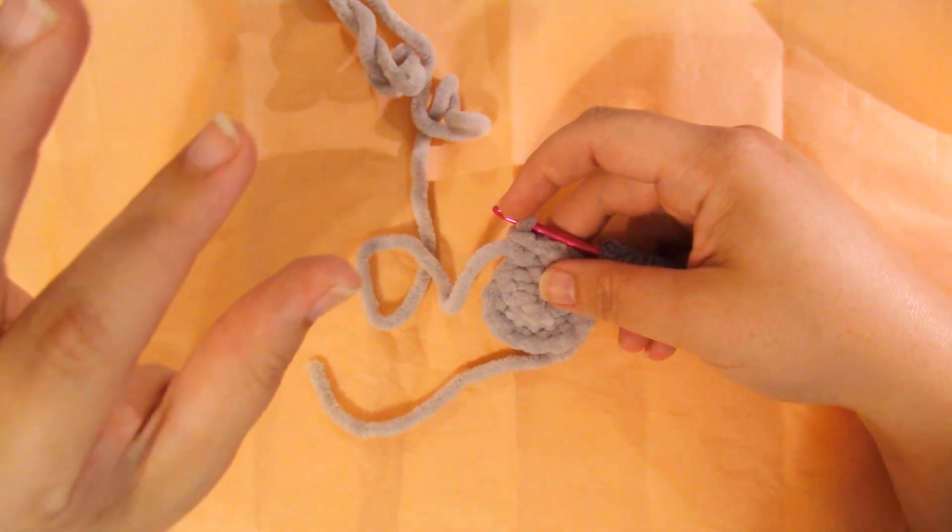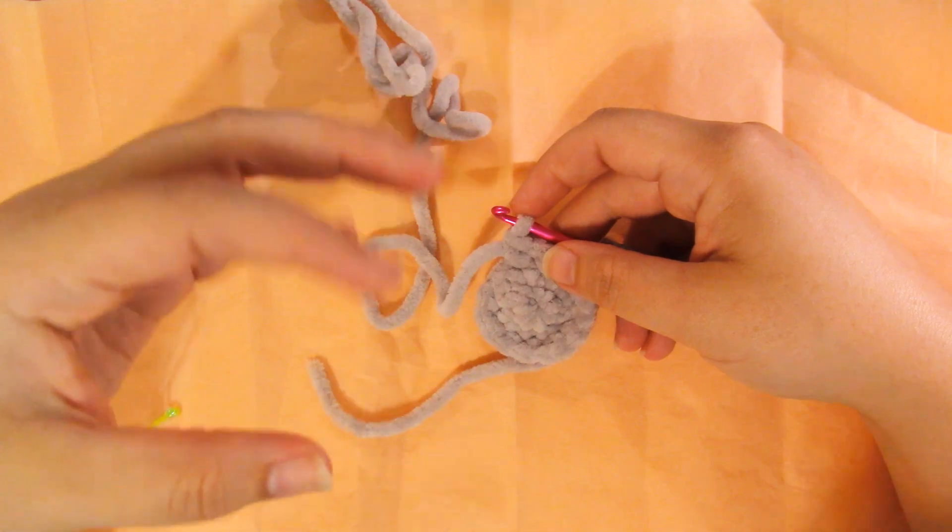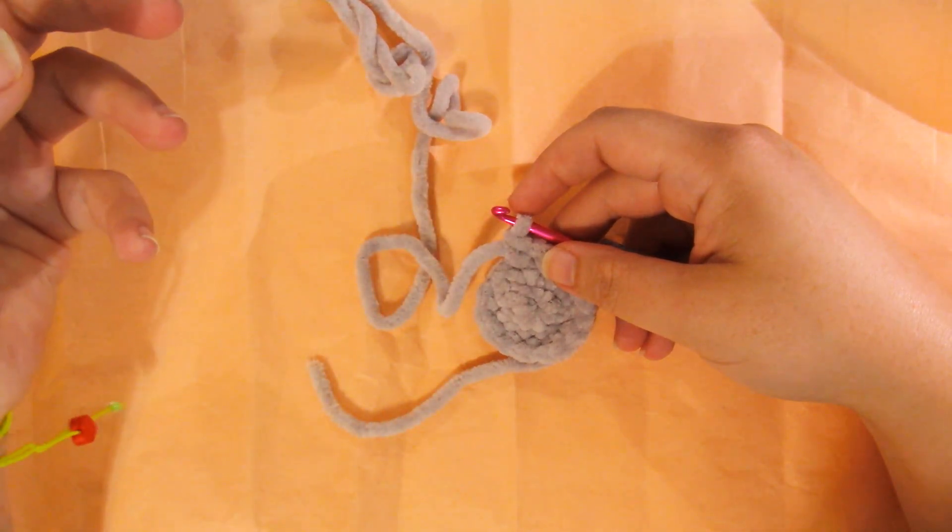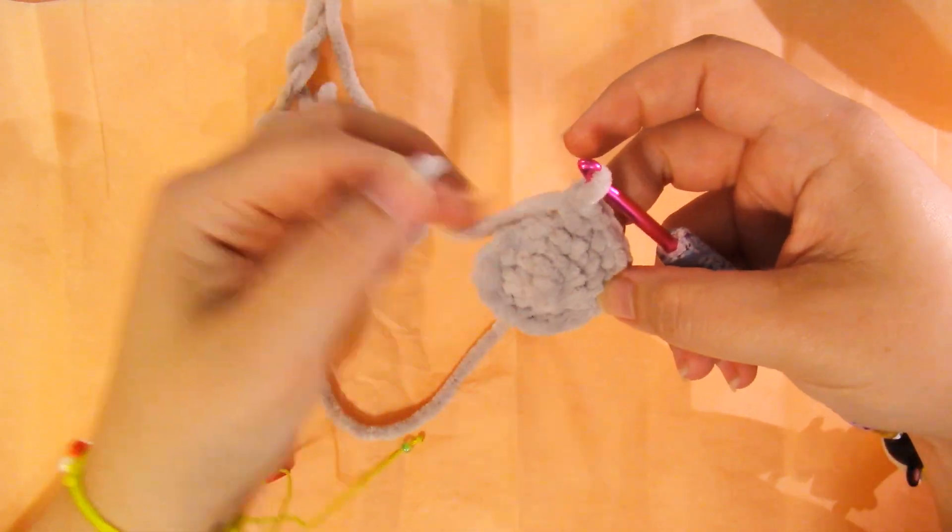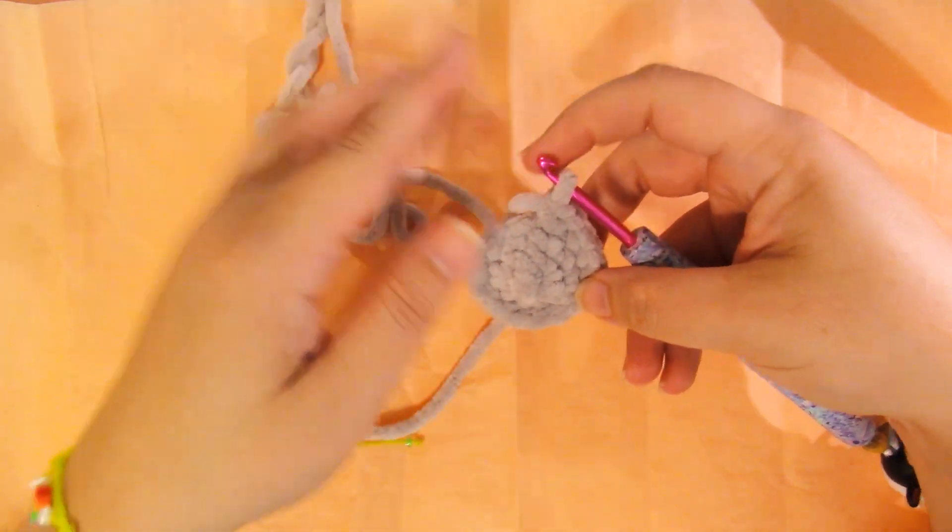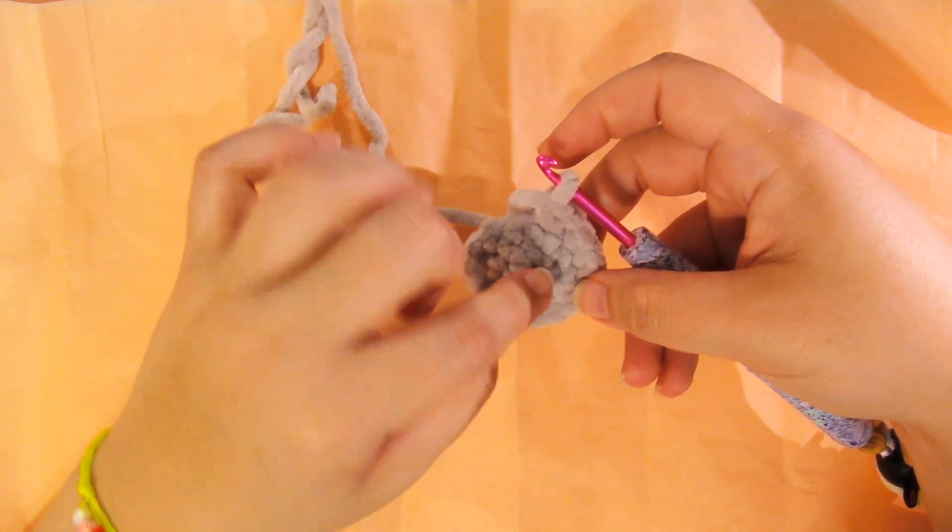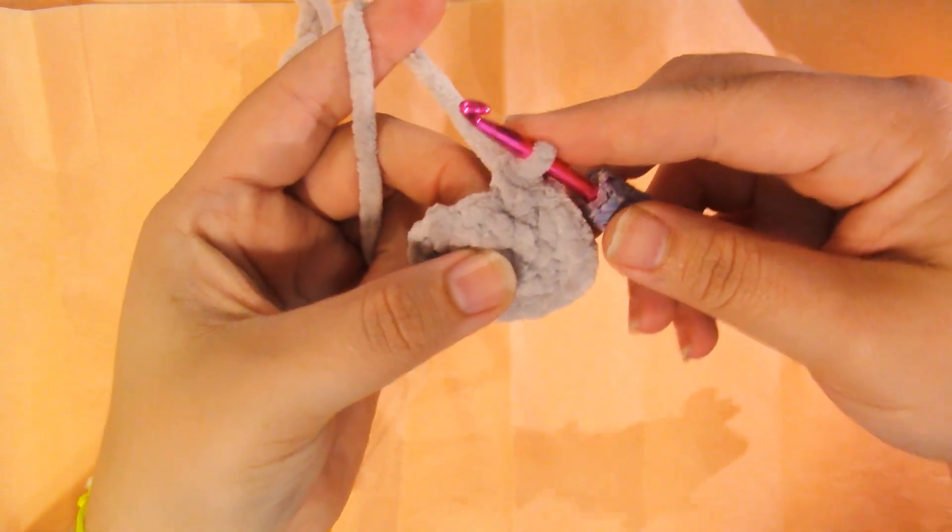Alright, so I'm just going to show you how it's done in case you need a visual aid for the instructions that are in the pattern. So I've already worked my first three rounds. Round four is to make 16 back post single crochets. So what we're going to do is we have our hook with our yarn.